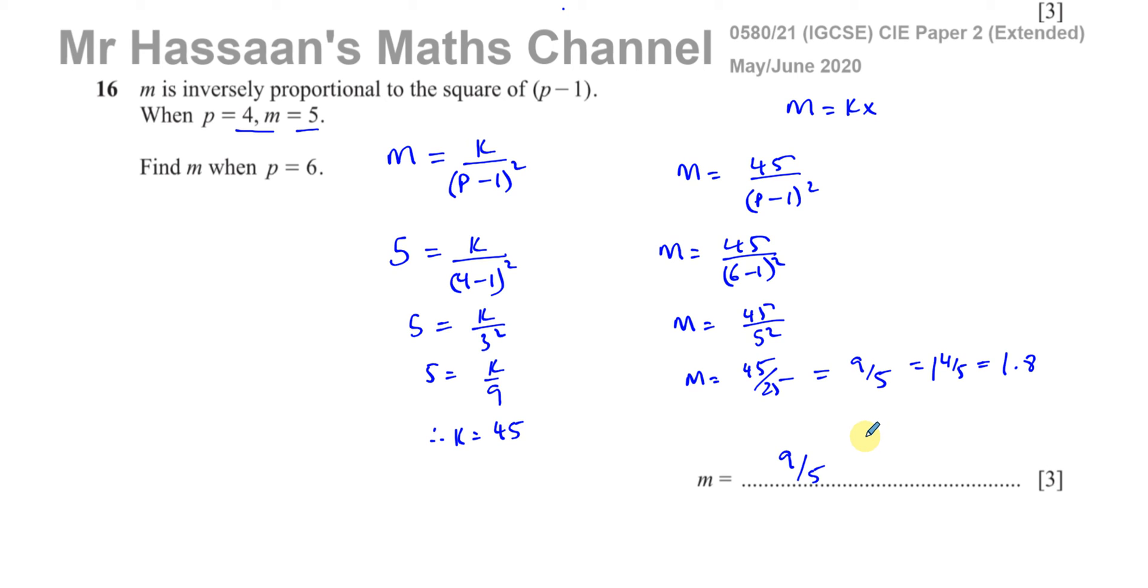And there's the answer for number 16. So when it says inversely proportional to, or varies inversely as, you can put k divided by. If the word inversely is not there, it says proportional to, or varies as, then you put k multiplied by. But this is inversely, so we use k divided by.